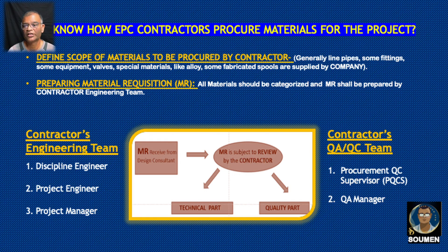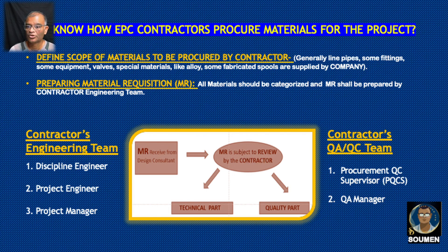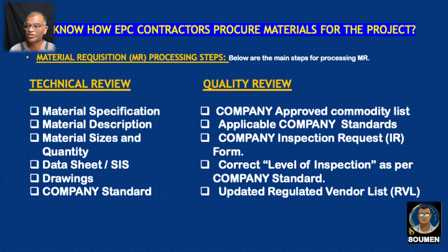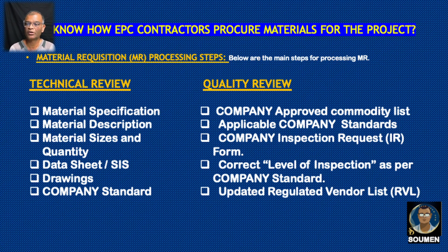All the valves, pipes, fittings, electrical materials, and telecom materials will be segregated and sorted in a disciplined way, and the MR will be prepared. The material requisition is provided by the company, and the technical and quality parts will be reviewed by the contractor engineering team. Then it goes for further approval. What to review technically includes: material specification, material description, sizes, quantity, data sheet, safety instruction sheets, drawings, and company standards. The engineering team and quality team check if it complies with project requirements.